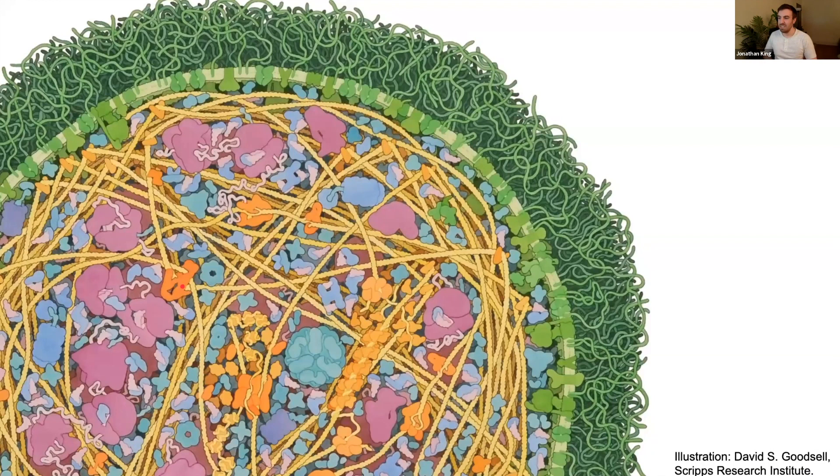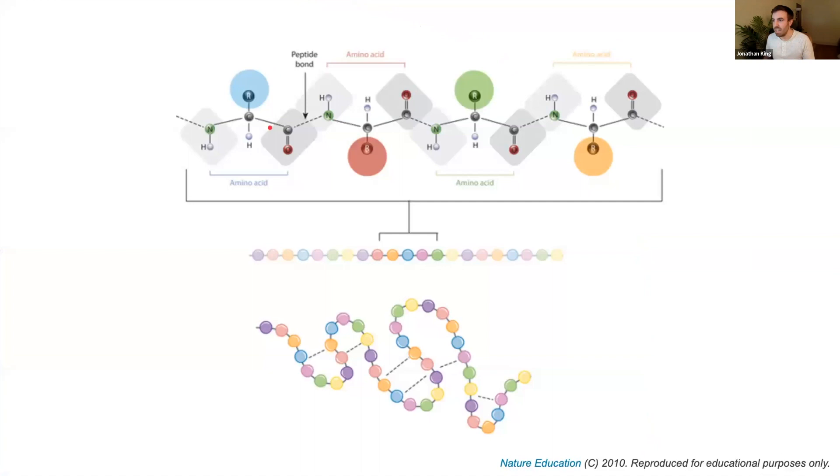Here's a really cool diagram of what a cell might look like in reality. It really goes to demonstrate how densely packed cells are. Other than these yellow items, which are DNA, and the green, which are some extracellular components, everything else in this picture is a protein, and it's doing really important work to keep the cell alive.